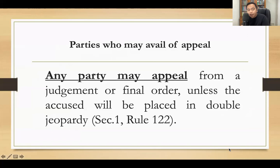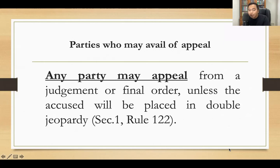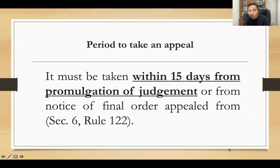Who can file an appeal? Any party may appeal from a judgment or final order unless the accused will be placed in double jeopardy. So once the accused is acquitted of the crime charged, the prosecution may no longer file an appeal because it would place the accused in double jeopardy.